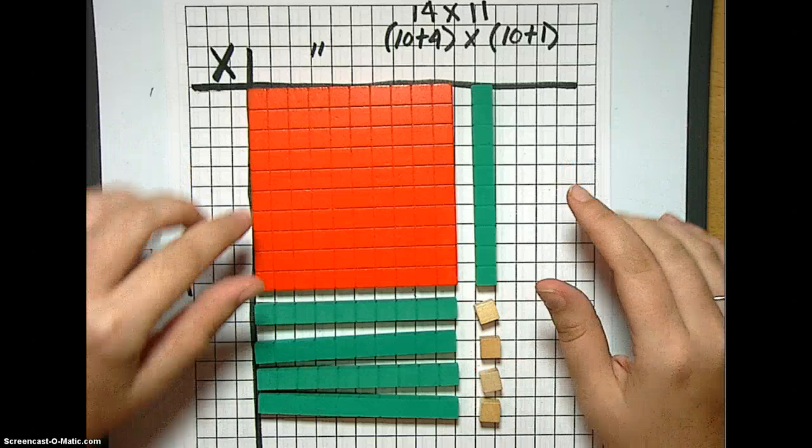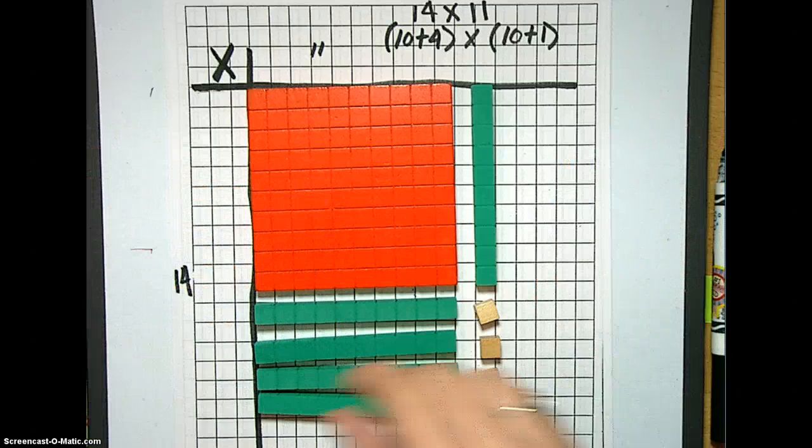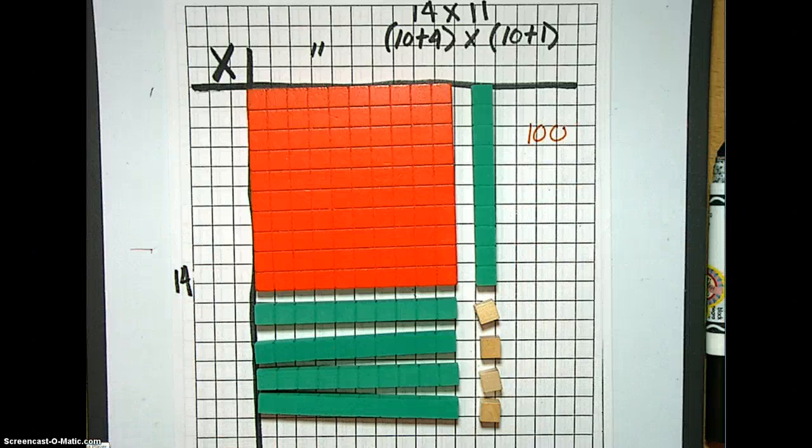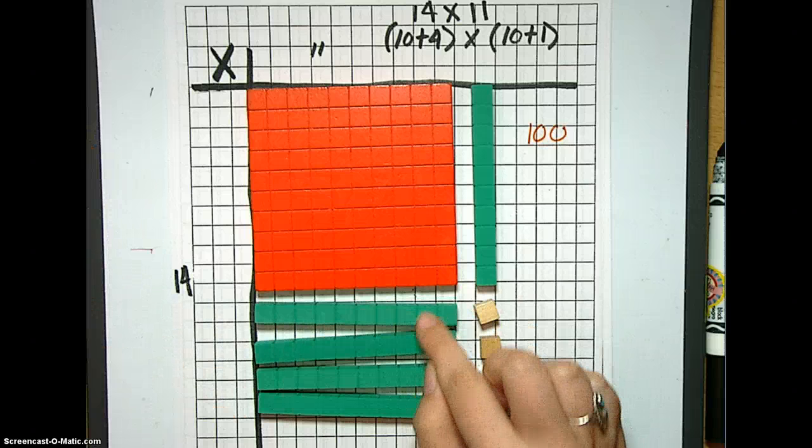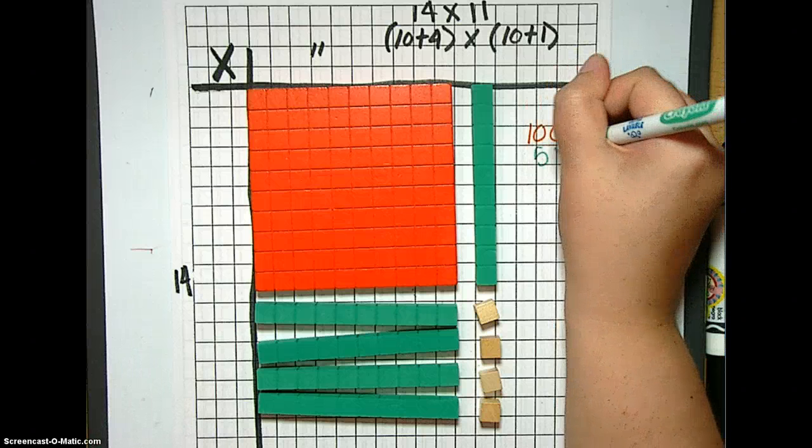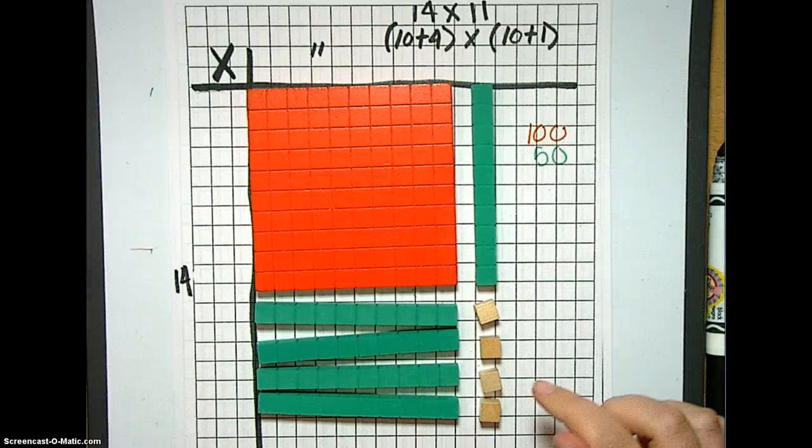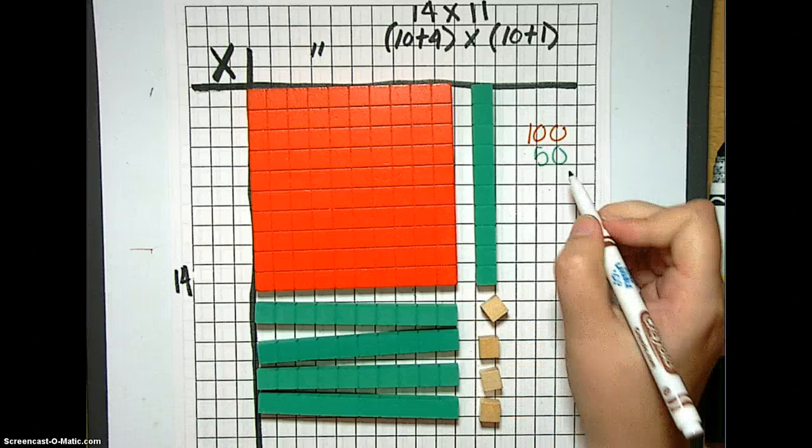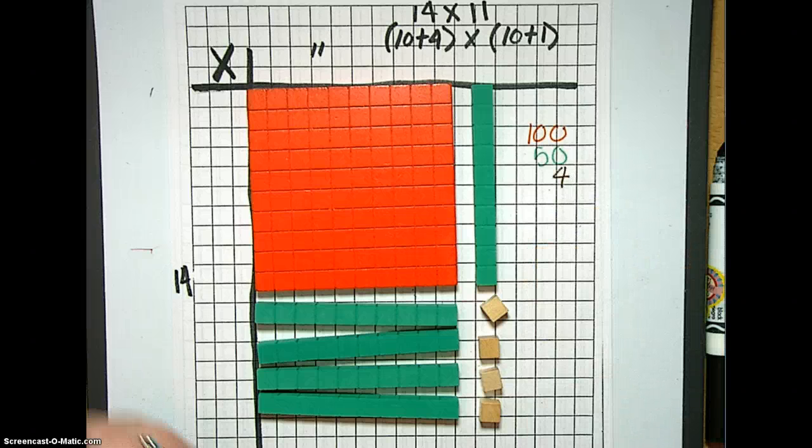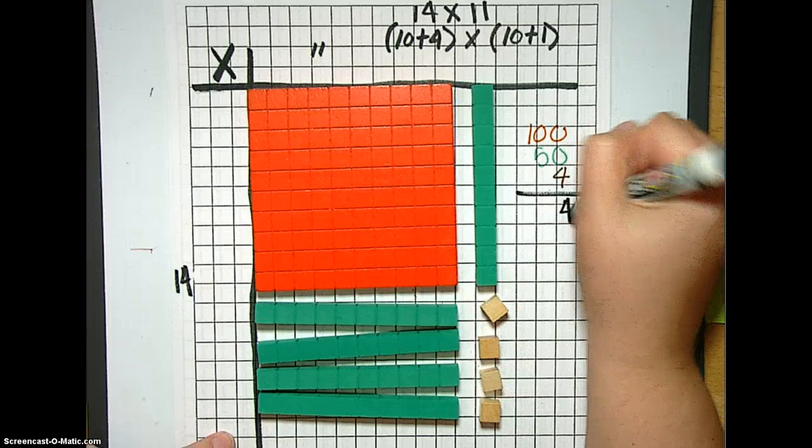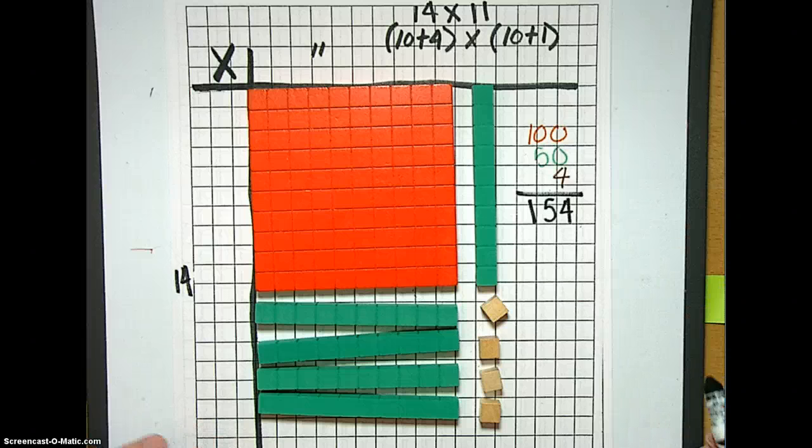So, what we have here is 100 in orange. We have 1, 2, 3, 4, 5, 50 in green. And 1, 2, 3, 4 in brown. Now, if we add these up, we have 4, 5, 1. 154 is the answer to 14 times 11.